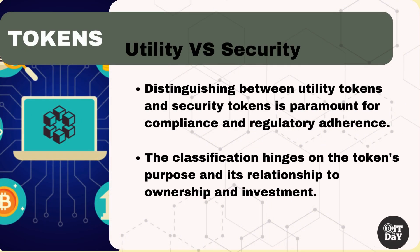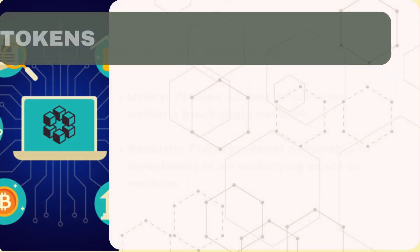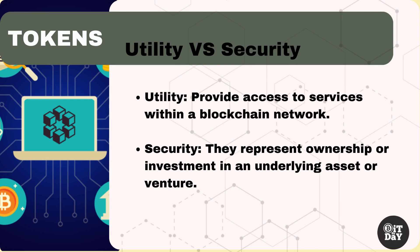By now, you will be wondering what the differences are between these two categories of tokens. Distinguishing between utility tokens and security tokens is paramount for compliance and regulatory adherence. The classification hinges on the token's purpose and its relationship to ownership and investment. While utility tokens are used to access services and utilities within a blockchain network, security tokens represent ownership or investment in an underlying asset or venture. It's important to acknowledge these distinctions to navigate the evolving legal landscape governing the issuance and trading of tokens.